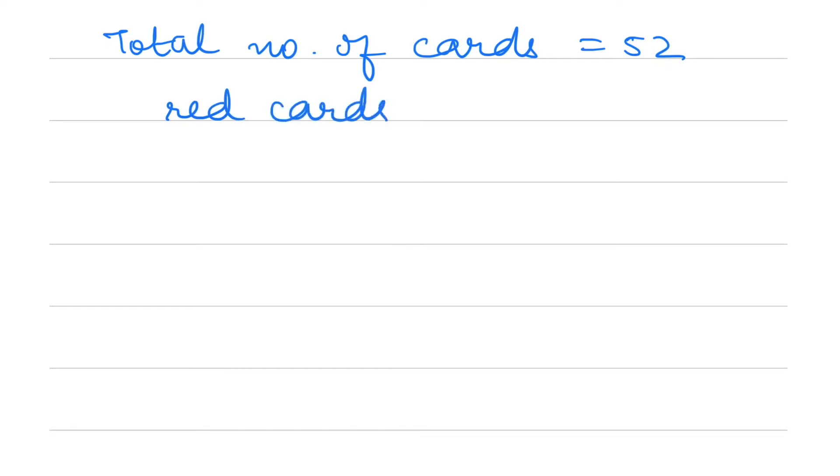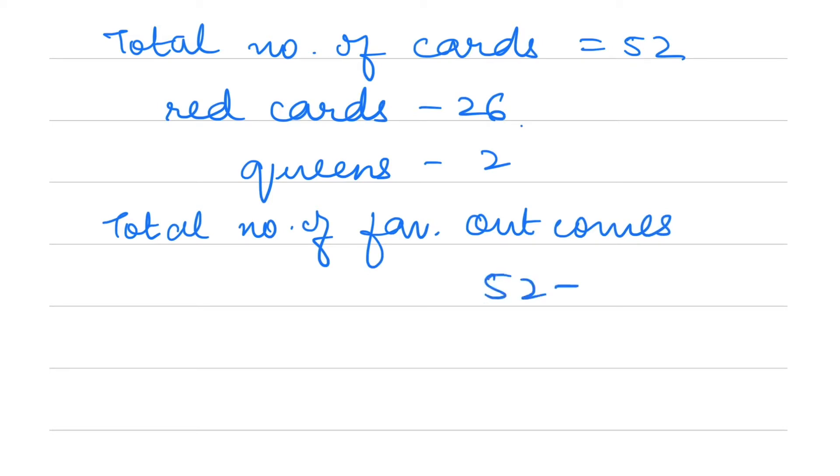How many red cards are there? 26. And queens other than red queens, we have two more black queens. So total number of favorable outcomes—we don't want red cards and we don't want queens—so we have 52 minus 28, which gives us 24.